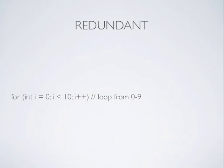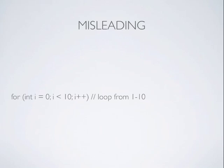Redundant comments aren't needed — I know that this code is looping from 0 to 9, I don't need a comment to tell me that. Misleading comments are even worse. Every comment is a lie waiting to happen — maybe this used to loop from 1 to 10, but then it was updated to loop from 0 to 9. The code was updated but the comment was not. So when you're skimming through and you see a comment that tells you something, are you going to believe it, or are you going to have to verify it in the code?